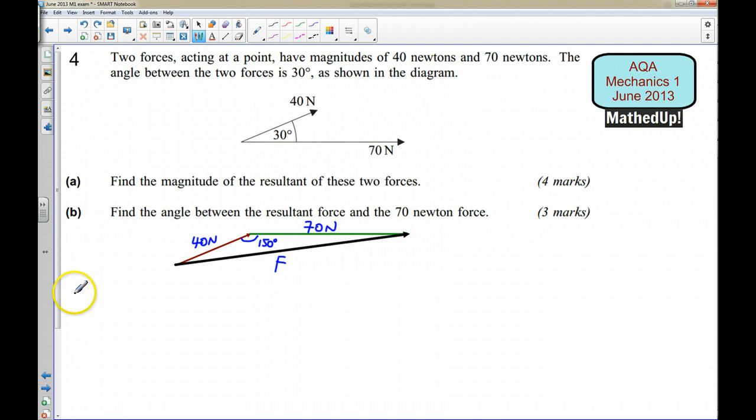So I know that using the cosine rule I've got a² = b² + c² - 2bc cos A. And I can stick in all the values I know, so a in this case is going to be F.